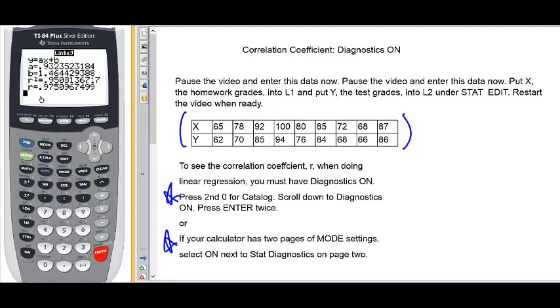So now this time, not only do I get the slope and the y intercept, I also get r squared. That's something called coefficient of determination. And I get r, the correlation coefficient.